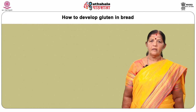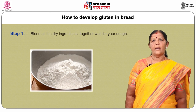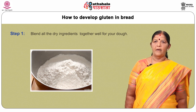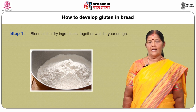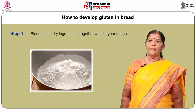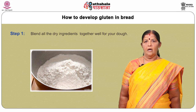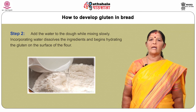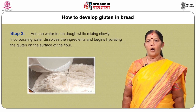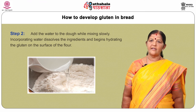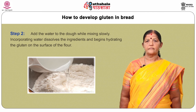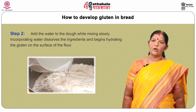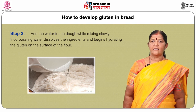Step 1: Blend all the dry ingredients together well. Blending the ingredients well before adding water will ensure that the ingredients do not become entrapped in isolated clumps once the water has been added. Step 2: Add the water to the dough while mixing slowly. Incorporating water dissolves the ingredients and begins hydrating the gluten on the surface of the flour. Adding the water slowly allows more time for hydrating the gluten and more time for the gluten particles to interact with one another.